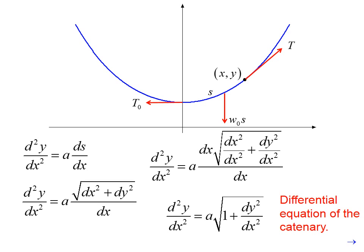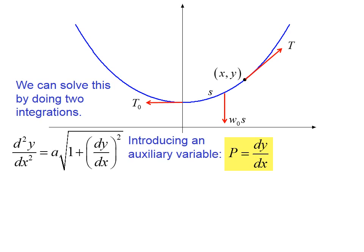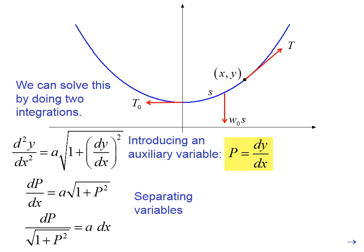Which is the differential equation of the catenary. We can solve this by doing two integrations. Introducing an auxiliary variable to simplify our calculations, we'll let p equal dy dx. So now we have dp dx equals a times radical 1 plus p squared. Separating variables, we get dp over radical 1 plus p squared equals a dx.